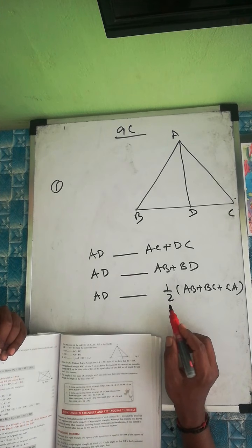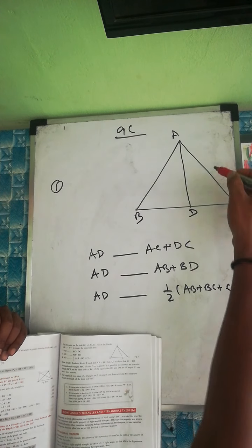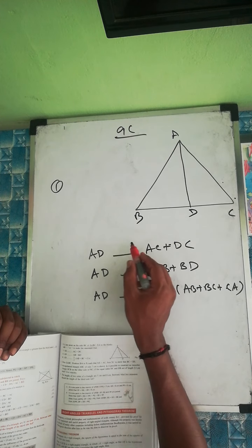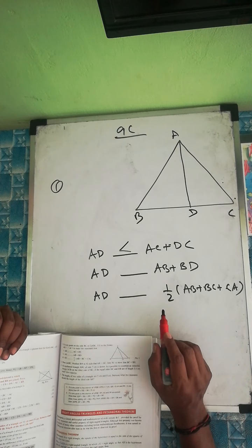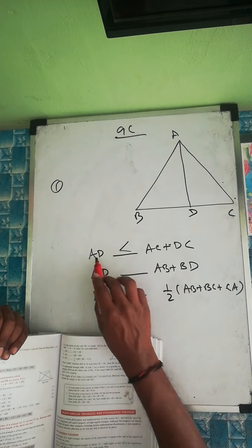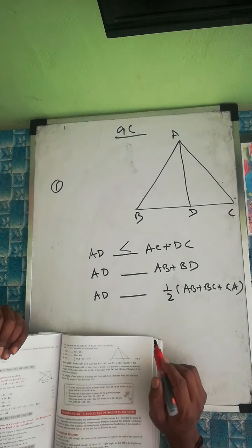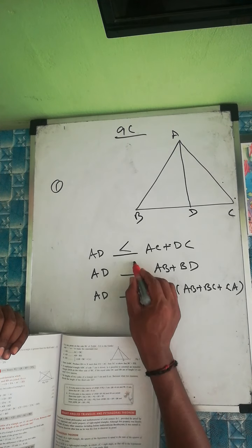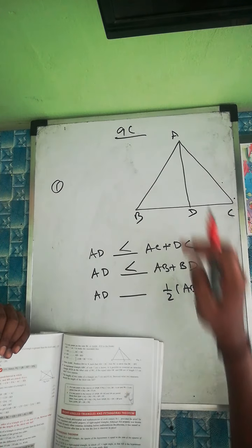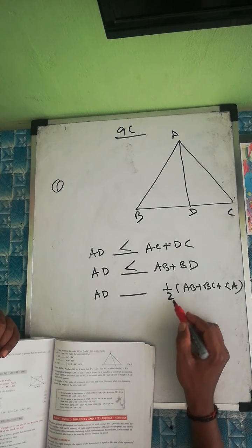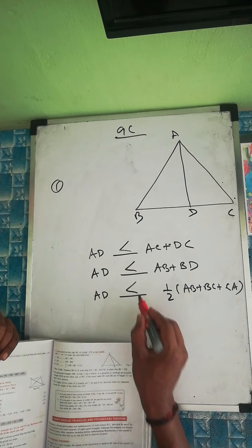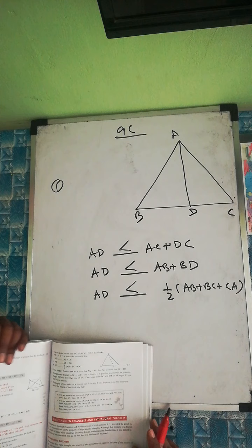For the first blank, AD compared to AC + DC: by the triangle inequality, the sum of any two sides is greater than the third side, so AC + DC is the bigger value, meaning AD is less than AC + DC. Similarly, AB + BD is greater than AD. For the third comparison, adding all sides AB + BC + AC gives a total greater than AD, so AD is less than half of that sum.